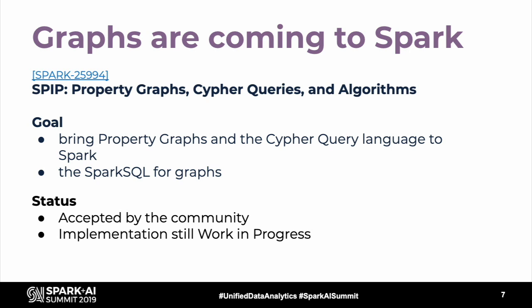The implementation is still a work in progress. It's a project we've been working on for several years, initially named Cypher for Apache Spark — short CAPS — which we've presented at previous Spark Summits. We now call it Morpheus. The module we're merging into Spark will probably be called Spark Cypher, just like Spark SQL.